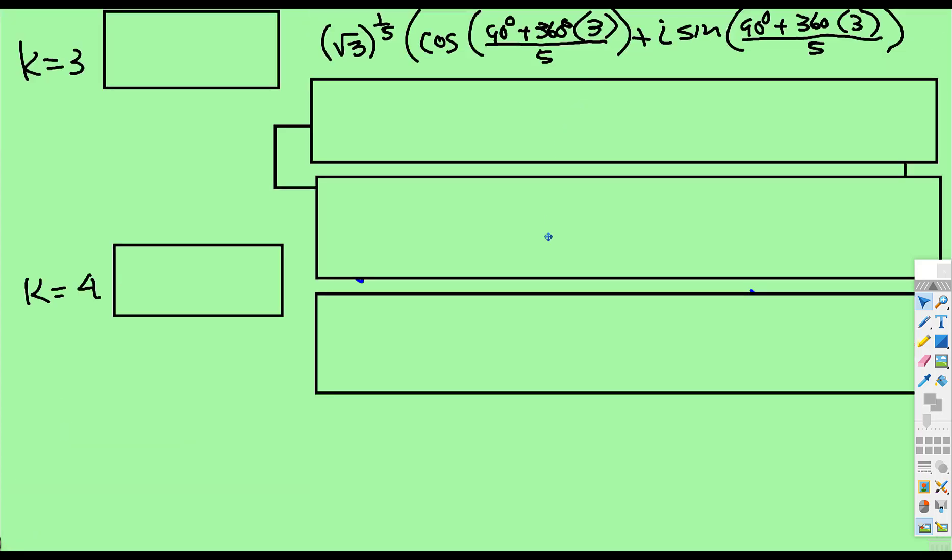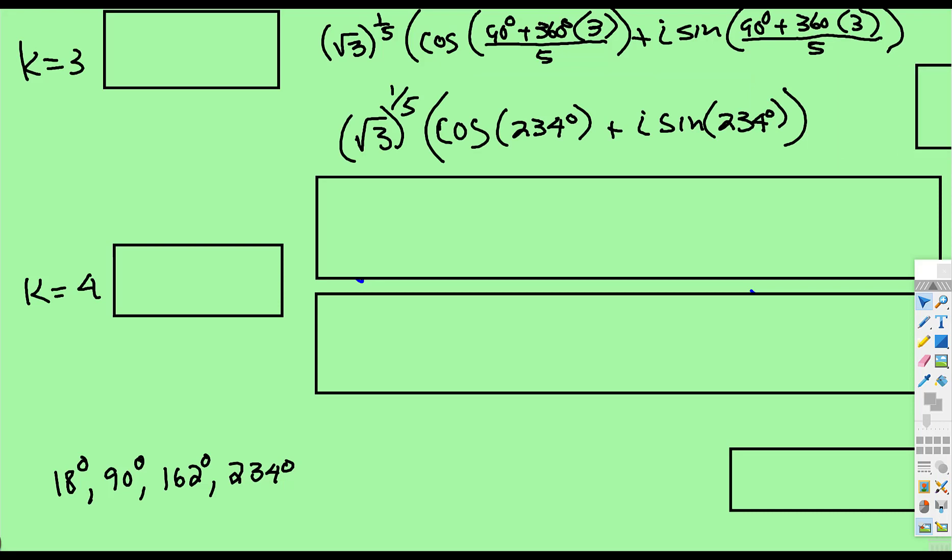All right, so now we're going to keep going. That's three of our roots, now we have to do it when k is equal to 3. Remember what we said a minute ago, when we started off with 18, then 90, then 162, we just keep adding 72, so our next one should be 234 degrees. And when you multiply all that out, divide 5, it is. And so the fifth root of √3 times cosine 234 is negative 0.66. And fifth root of √3 times sine 234 is negative 0.9i. And remember these are about, both of those round to those problems.